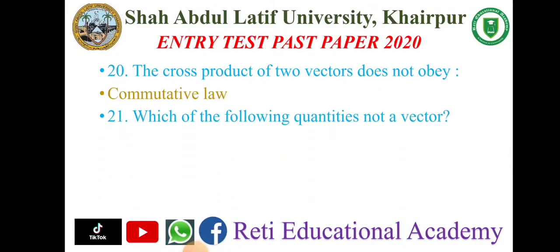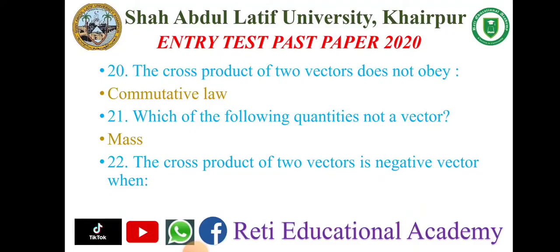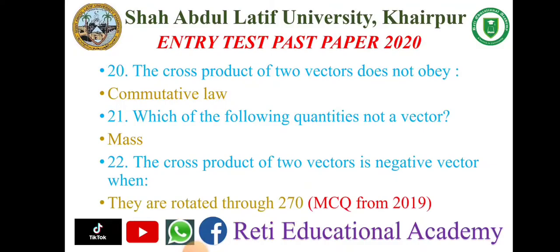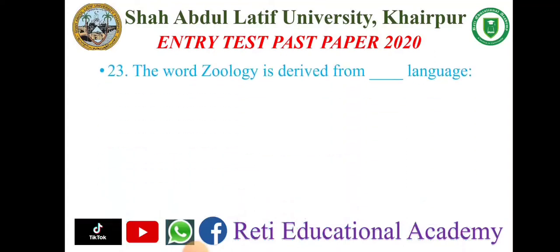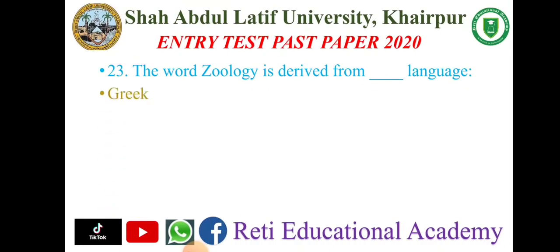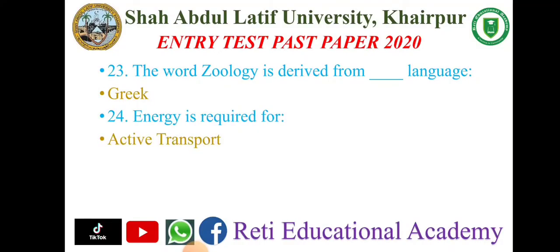Question number twenty-one: Which of the following quantities is not a vector? The correct answer is Mass. Question number twenty-two: The cross product of two vectors is a negative vector when they are rotated through 270 degrees. This question is from 2019. Question number twenty-three: The word 'Zoology' is derived from the Greek language. Question number twenty-four: Energy is required for active transport.